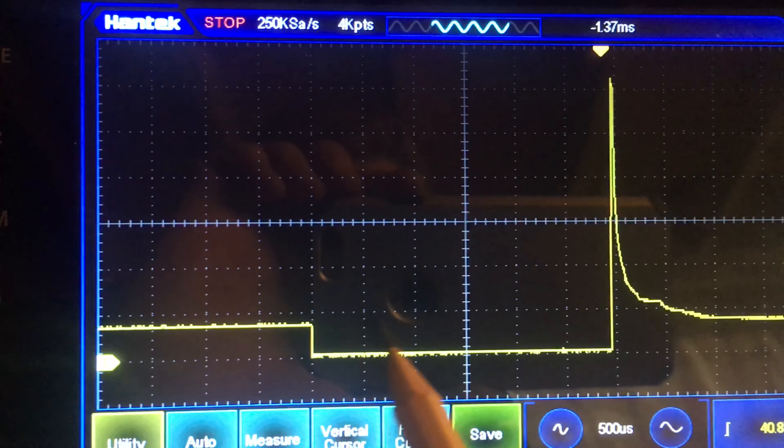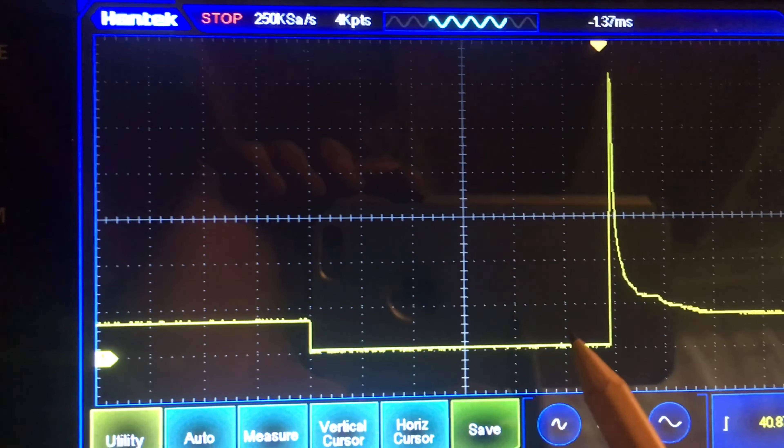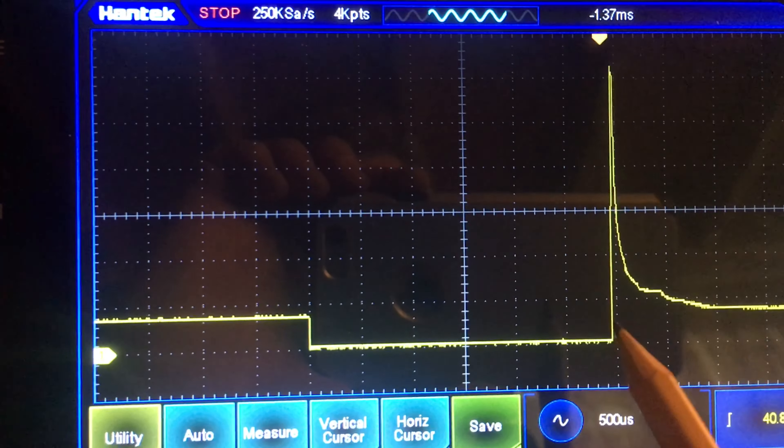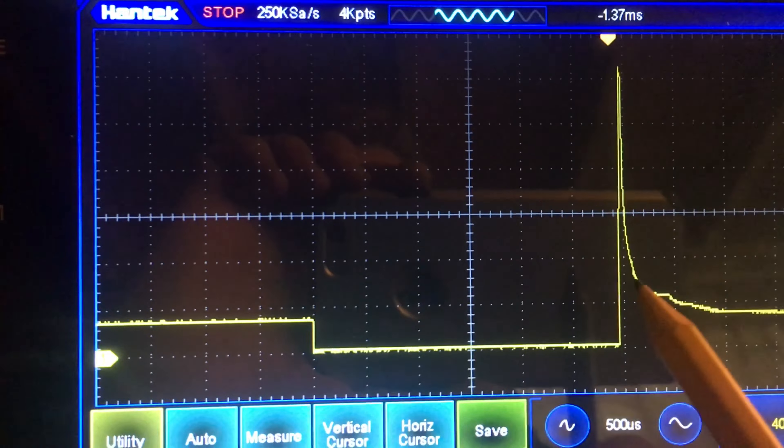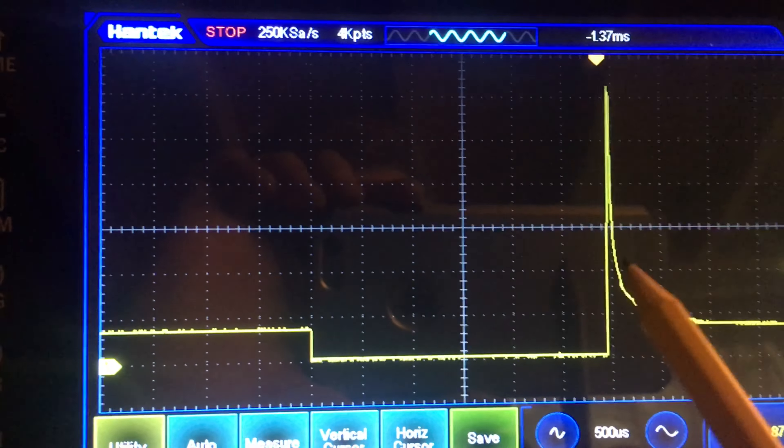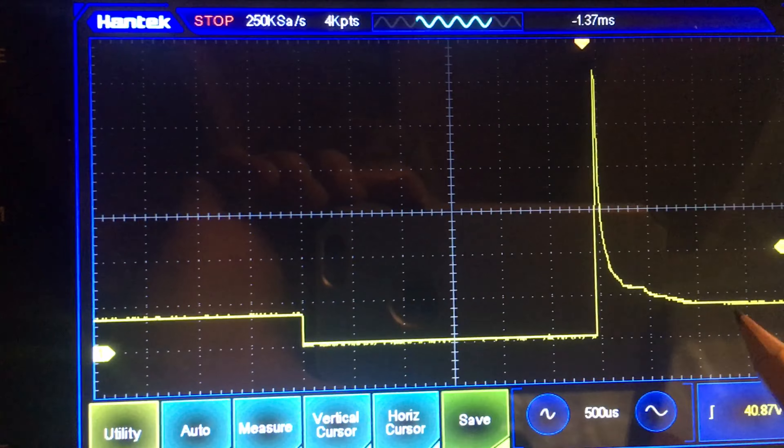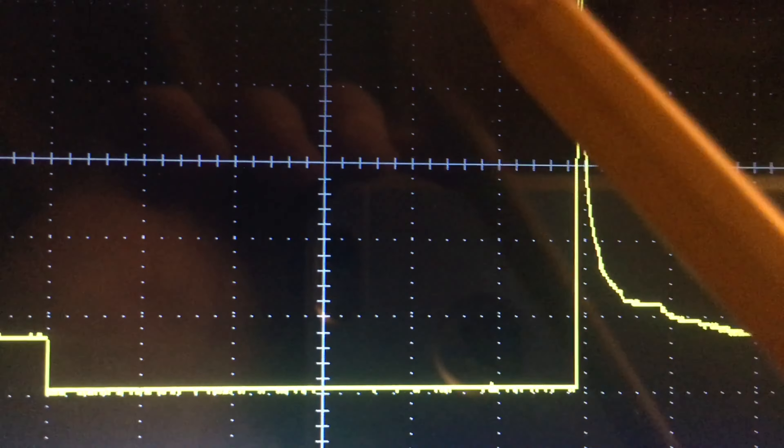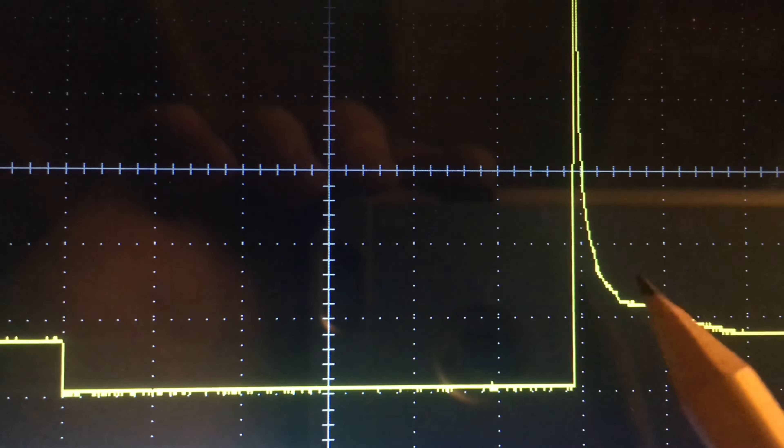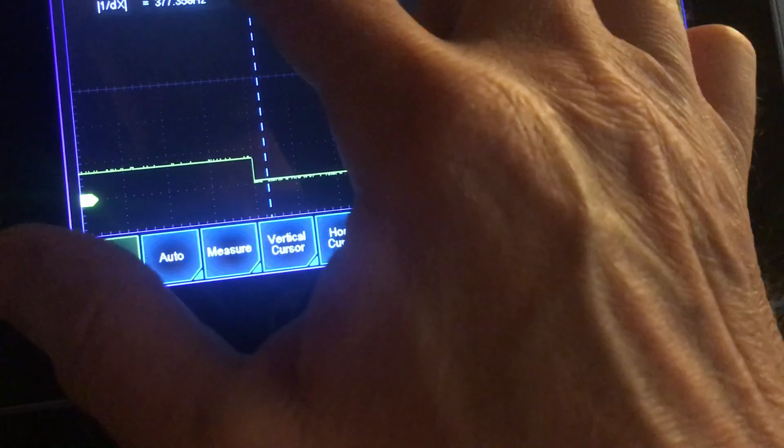The on-time and the open-time are two different things. We have the drop to ground, so the field, magnetic field, is formed, energized, pulling the pintle up. The ground is lifted at this point here, in which case the magnetic field collapses, hence the self-induction spike, and you can see the energy dissipating over this timeline here.